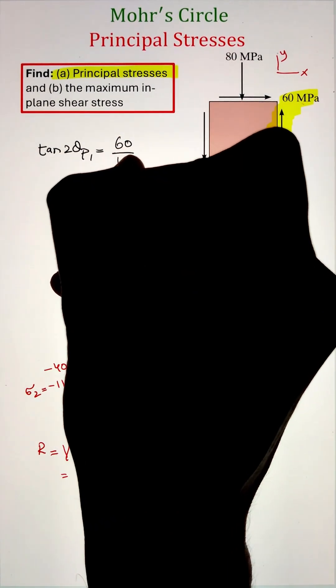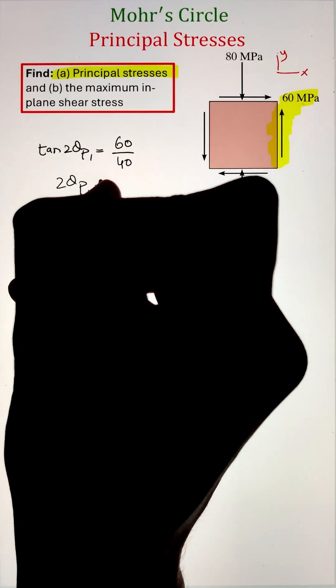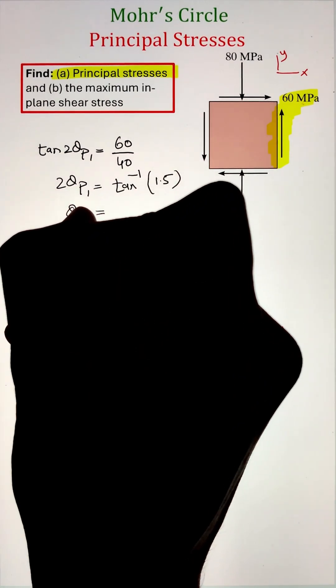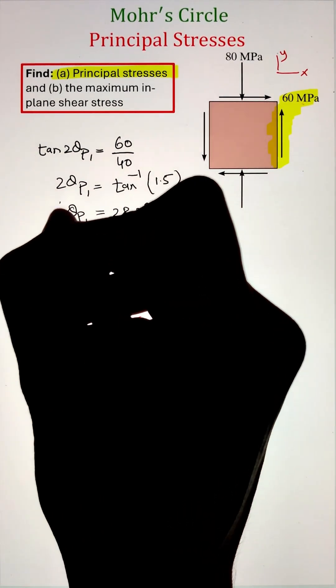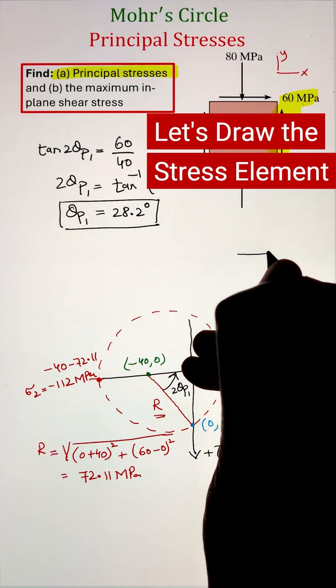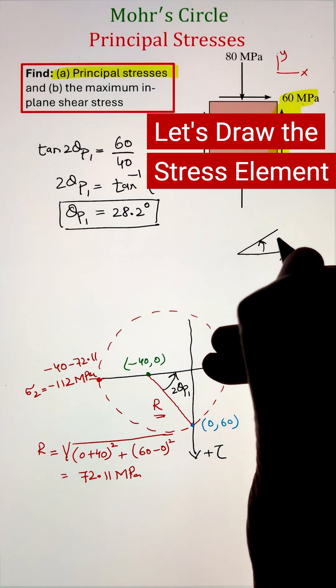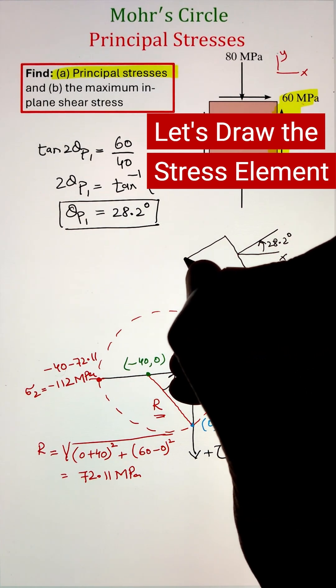Next, we can identify the orientation of the principal plane by measuring the angle from our reference plane to the principal axis, that is 2 theta P1, which can be calculated using our trigonometric analysis and coming as 28.2. Afterwards, we can sketch this on a square element.